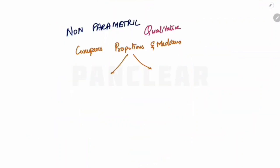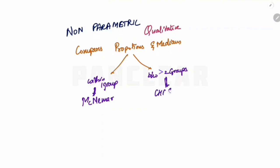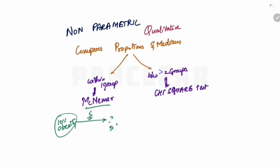Next is the non-parametric test, also called the qualitative test. We compare proportions and medians. Within one group, we use the McNemar test. For example, one group of population with 10% obesity — after an intervention in the form of drugs, lifestyle changes, and diet changes, the obesity drops to 5%. Comparing the before and after proportions within the same group, we use the McNemar test.